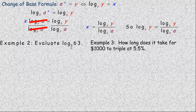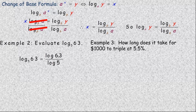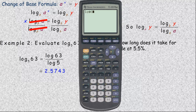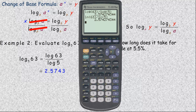Example 2: evaluate the logarithm of 63 base 5. Unlike the previous examples, it's not convenient to write 63 as a whole-number power of 5 — hence the change of base formula. To evaluate log base 5 of 63, take the log of 63 and divide it by the log of the base, 5. In your calculator, you type log(63) divided by log(5), and you get approximately 2.5743. If you use the ln key, it gives exactly the same calculation.